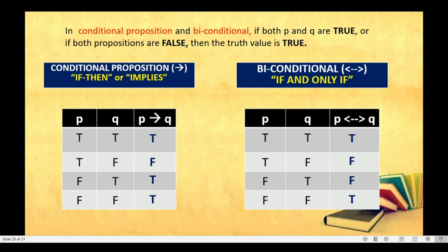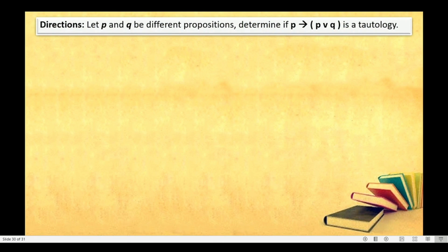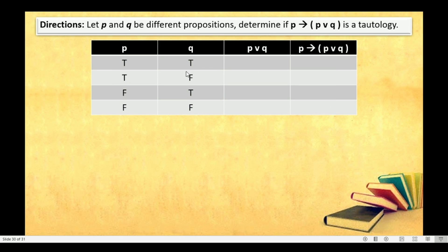Let's try an example of a truth table. The direction is: let P and Q be different propositions, and determine if P implies the disjunction of P and Q is a tautology. Let's try to determine if this proposition is a tautology or not. Recall that tautology is a compound proposition that always produces a true truth value. First, we have to construct a truth table. We have P and Q — P is true, true, false, false, and Q is true, false, true, false. We already have the value of P. Now we need to find the value of P or Q.